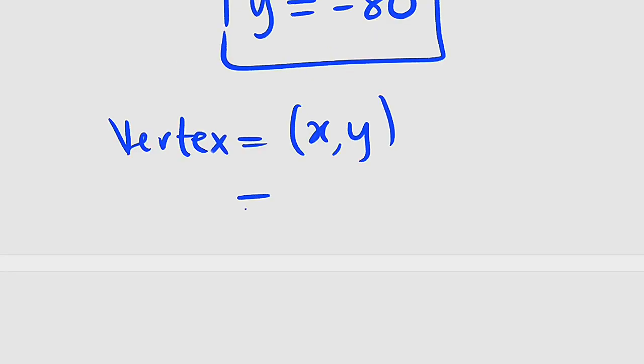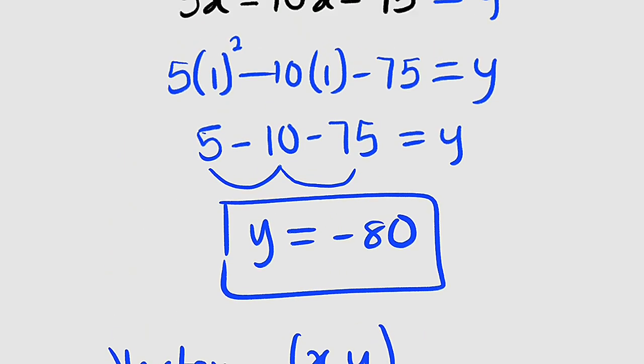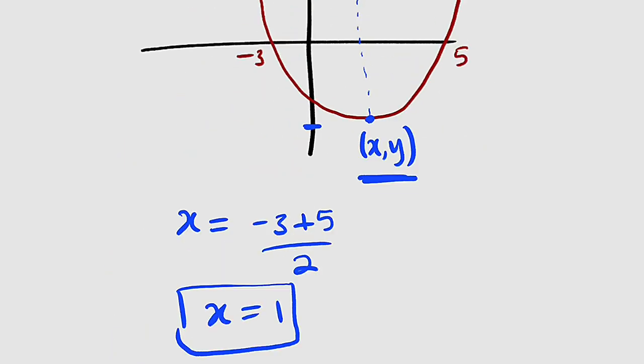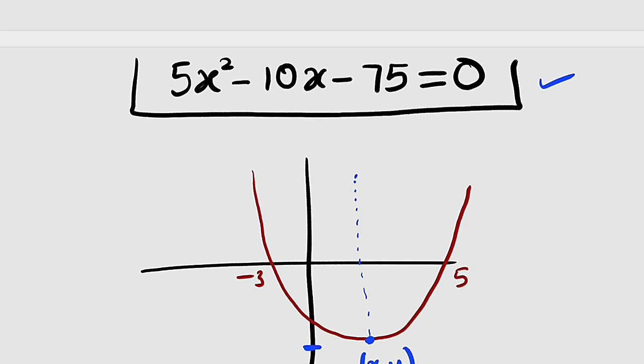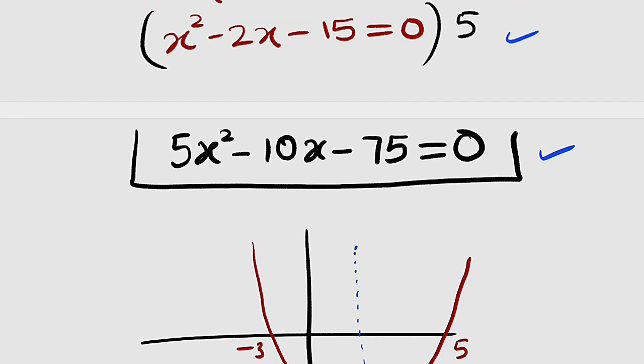Therefore the vertex, x which is an x y coordinate at that point, is equal to 1 for x and negative 80 for y. This is the vertex of that quadratic equation. Thank you for watching. Do share to your learning colleagues and don't forget to subscribe to my YouTube channel for more exciting videos. Bye-bye.